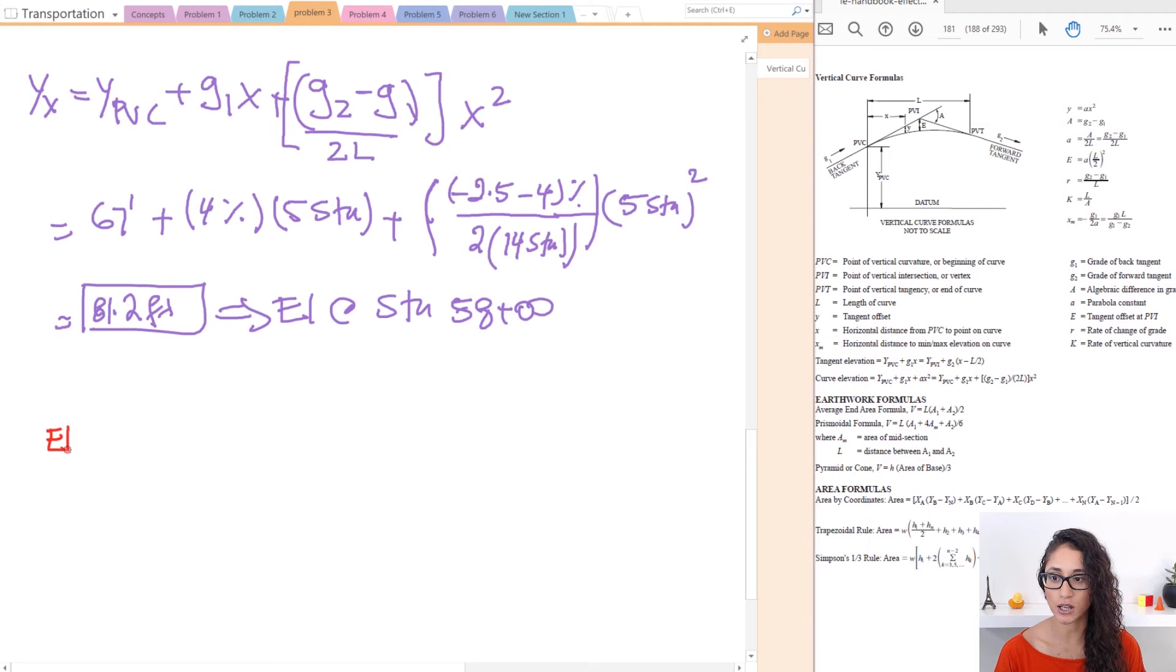So the elevation at PVT is equal to the elevation at PVI plus G2 times L over 2. So note here guys, to find PVC we take the elevation at PVI and we do minus G1, grade 1, times L over 2. Now to find the elevation at PVT we actually take the elevation at PVI and we add the second grade G2 and we multiply it by L over 2.